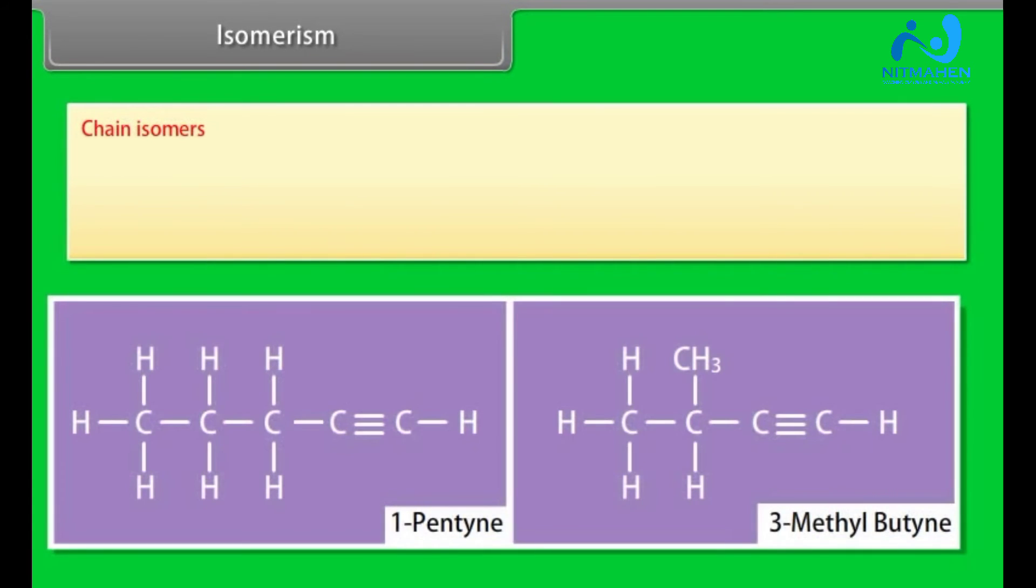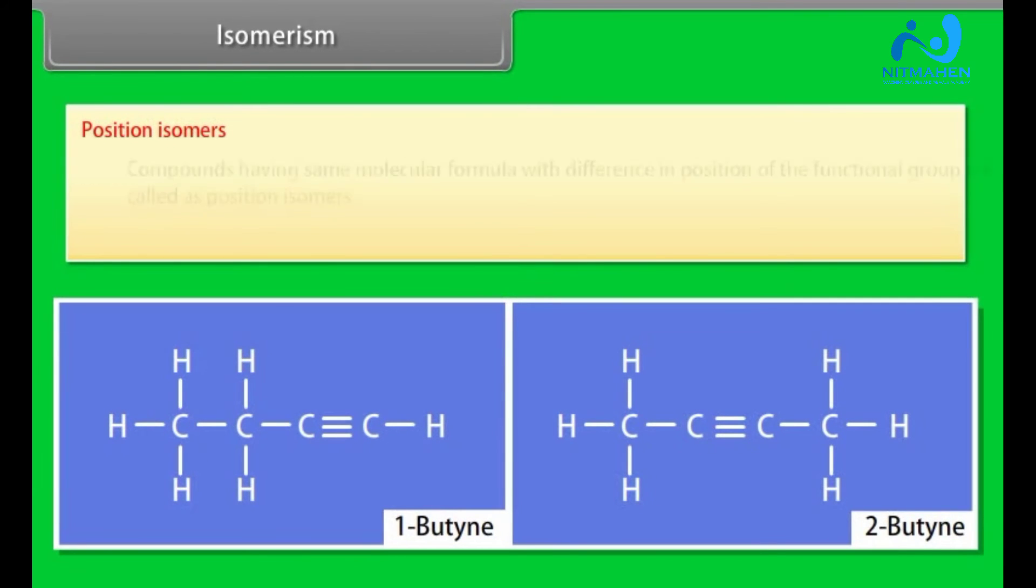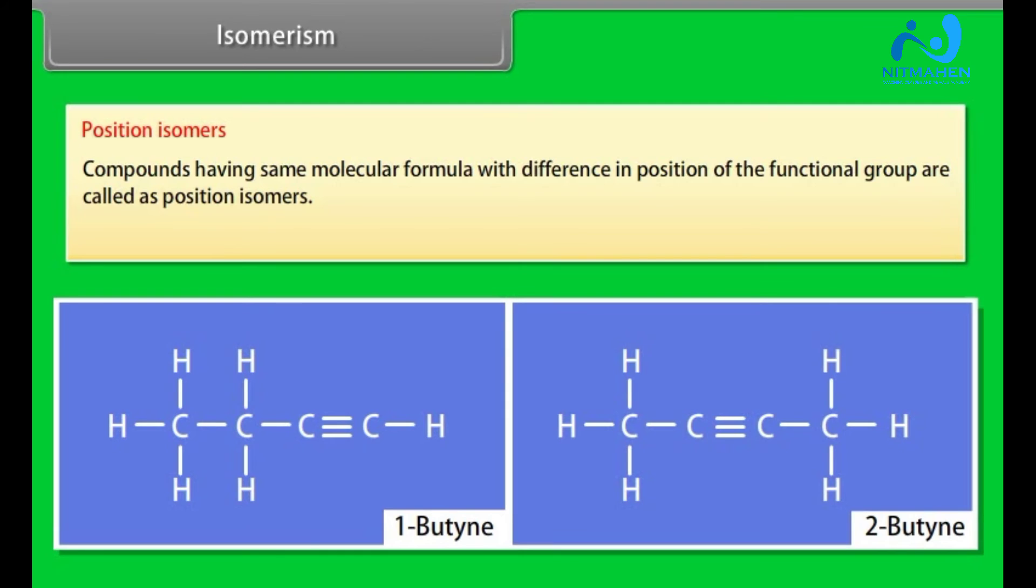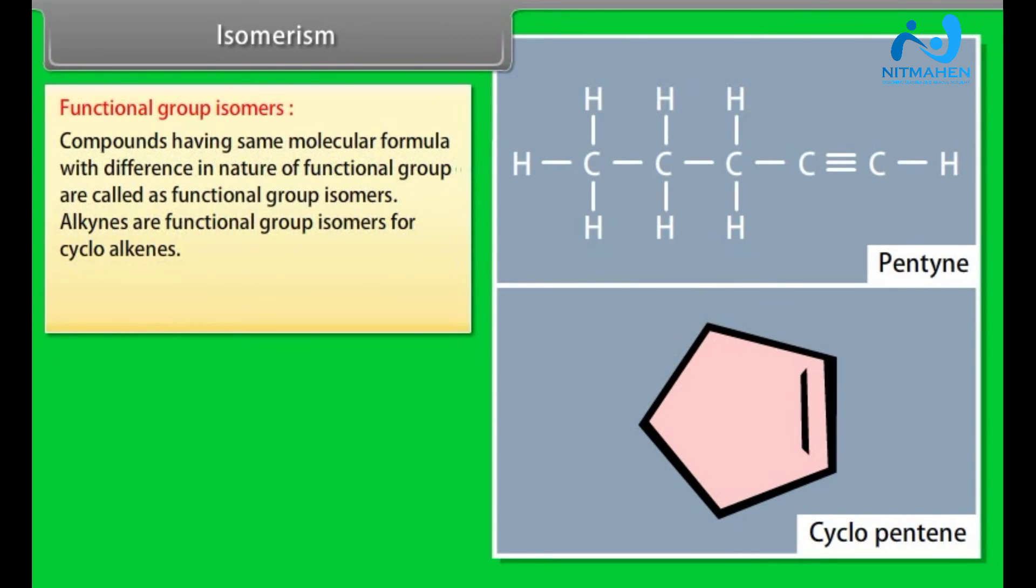Isomerism. Chain isomers: Compounds having same molecular formula with difference in carbon chain pattern like linear or branch are called chain isomers. 1-pentyne is chain isomer of 3-methylbutyne. Position isomers: Compounds having same molecular formula with difference in position of the functional group are called as position isomers. 1-butyne and 2-butyne are position isomers. Functional group isomers: Compounds having same molecular formula with difference in nature of functional group are called as functional group isomers. Alkynes are functional group isomers for cycloalkenes. For example, pentyne and cyclopentene are functional group isomers.